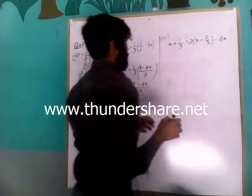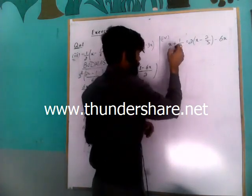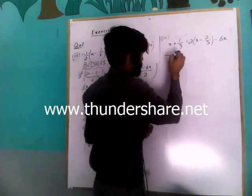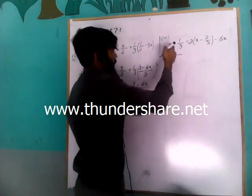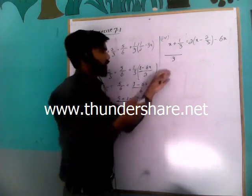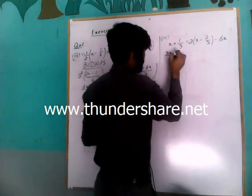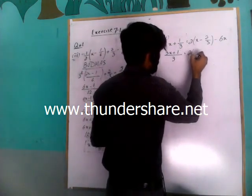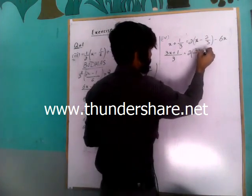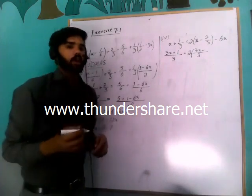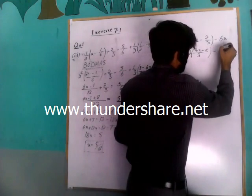The equation is: 2 into x minus 2 over 3, minus 6x. According to BODMAS law, firstly we will solve the bracket. From the left-hand side we will take LCM. LCM is coming as 3. So 3 will divide by the denominator of the first term — 3 divided by 1 gives 3 — and 3 will multiply with x, so 3x will come, plus 1 will come. On the right side, 2 into 3x will come minus 3 divided by 3 gives 1, and 1 multiplied by 2 gives 2, so minus 6x.